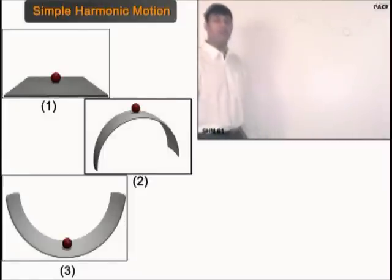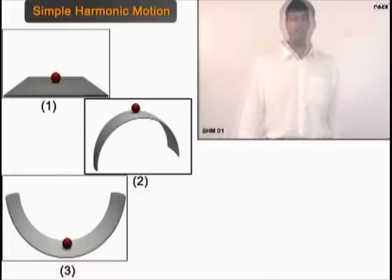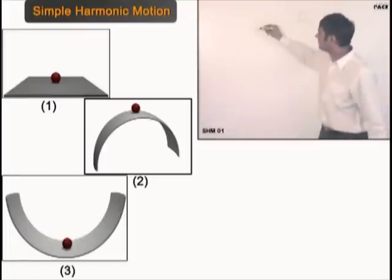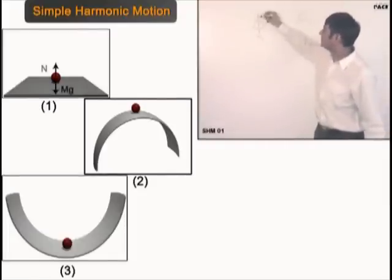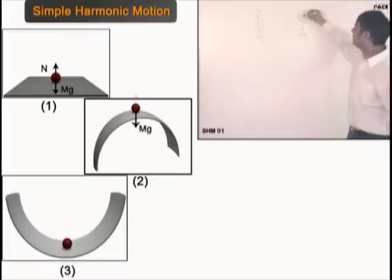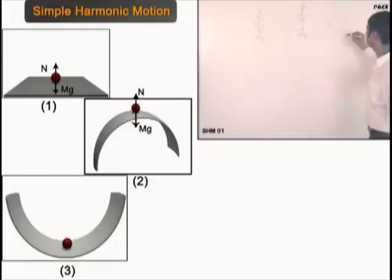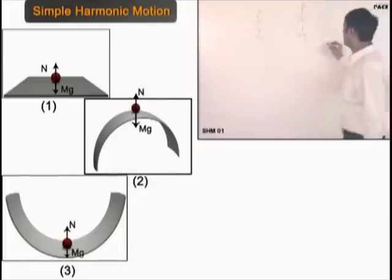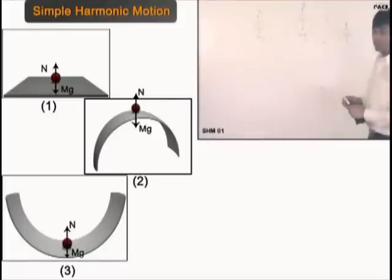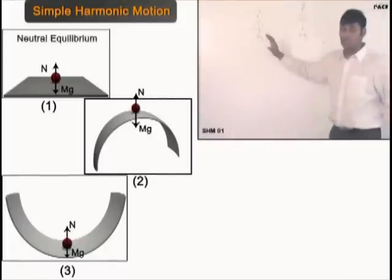These three bodies are in equilibrium — they are at rest, net force on them is zero, both vertical and horizontal. Tell me, out of these three, which is stable equilibrium? Which is unstable? Which is neutral? Neutral.